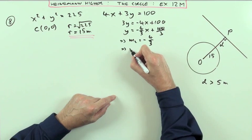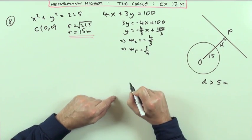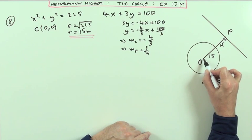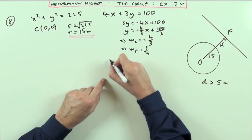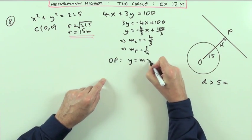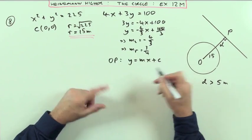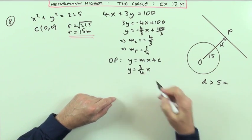That means the radius must be perpendicular, so the gradient of the radius is 3/4. Since the radius passes through the origin, I know the equation of line OP. The line OP must have equation y = mx; c is 0, so y = 3/4x.